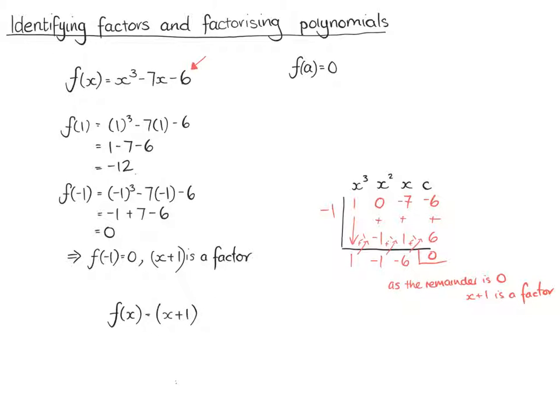And then our second bracket comes from here. That's our x squared, that's our x, that's our constant. So we have x squared minus x minus 6. So we have x plus 1, and then we've got this here. So we've got x at the front of both of our brackets. Minus 6. So we've got x at the front of both of our brackets.